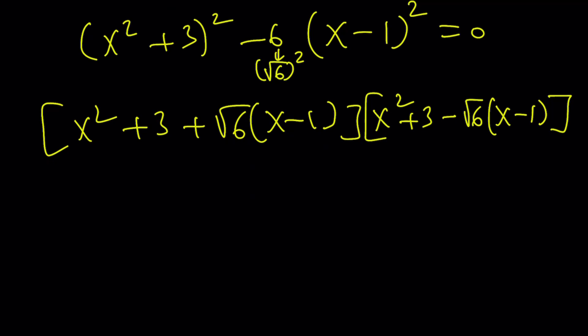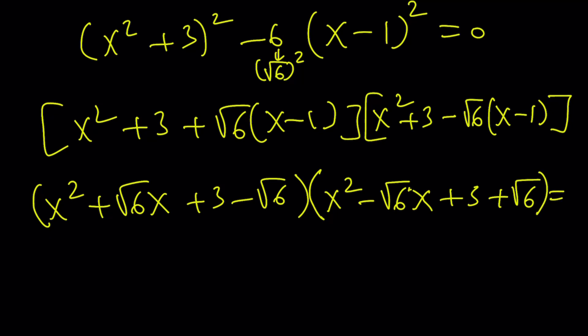We can factor this as x squared plus three plus square root of six times x minus one. That's going to be one of the factors. By the way, I wrote the six as square root of six squared, so this became difference of two squares. And then the other factor is just going to be x squared plus three minus the same thing, and that's equal to zero. This gave us two quadratics which factors the quartic. x squared plus square root of six x plus three minus square root of six, and the other one is x squared minus square root of six x plus three plus square root of six, and the product is equal to zero.